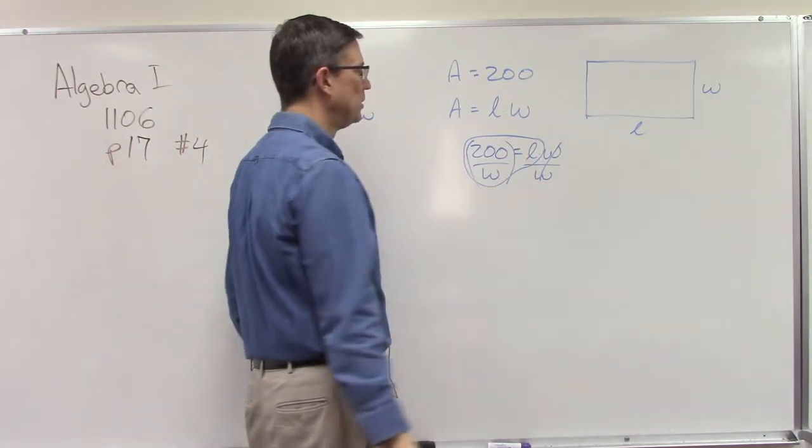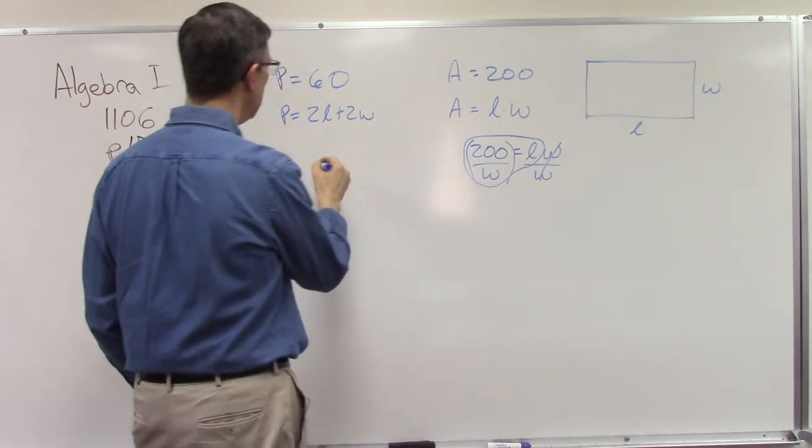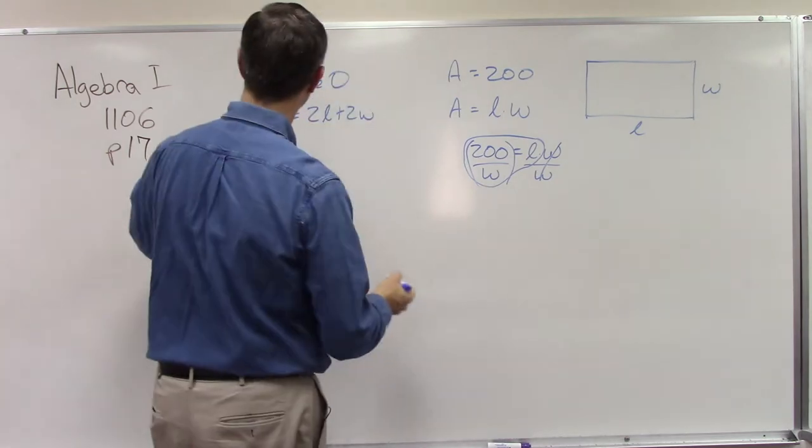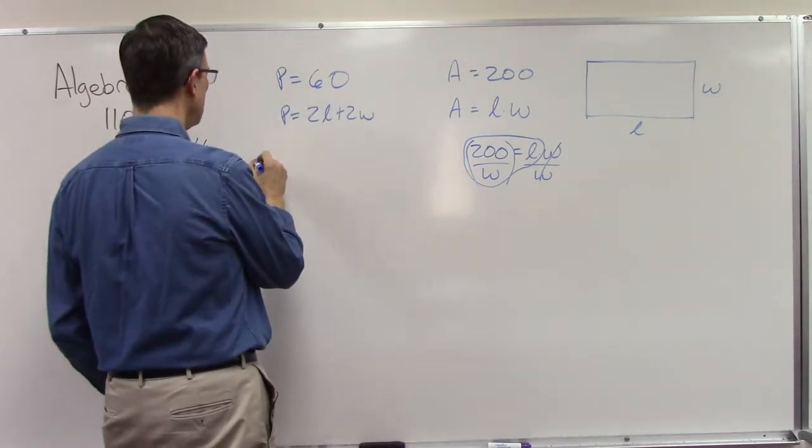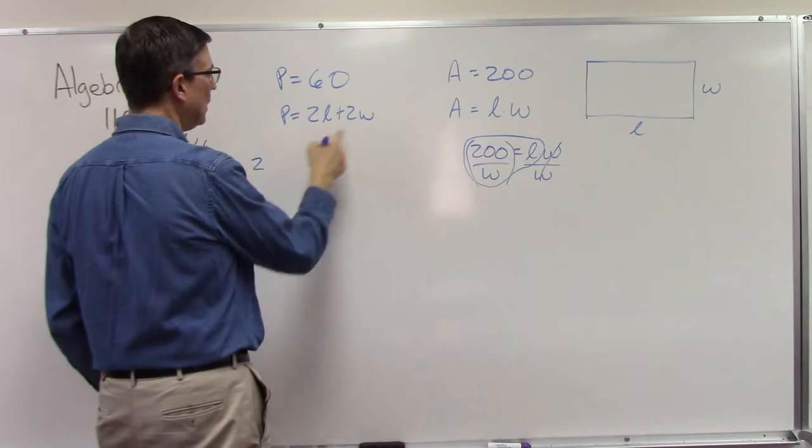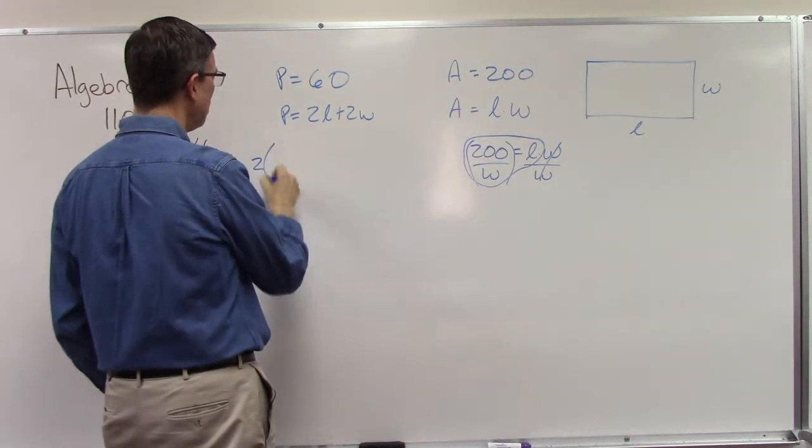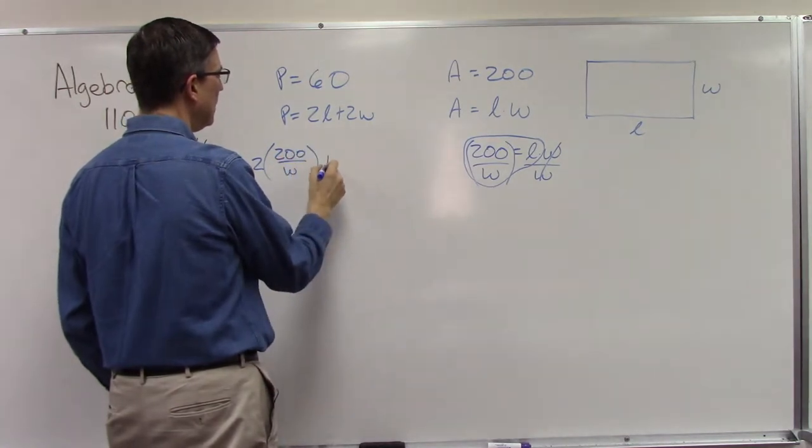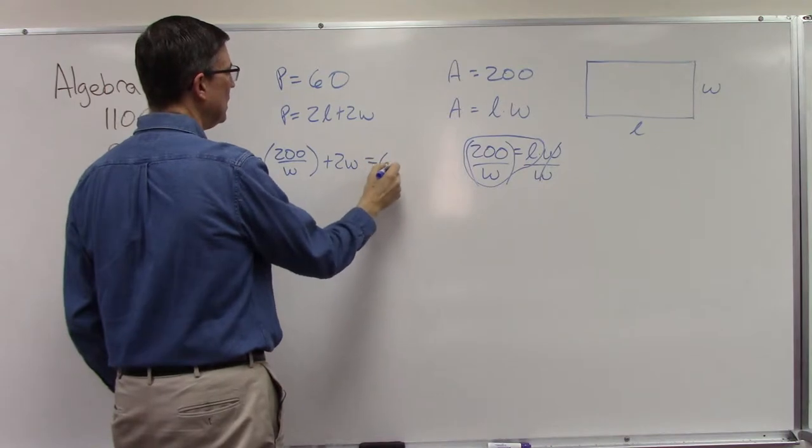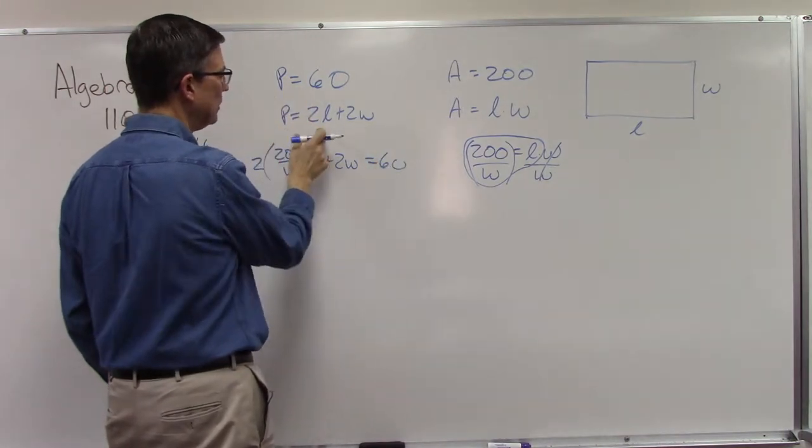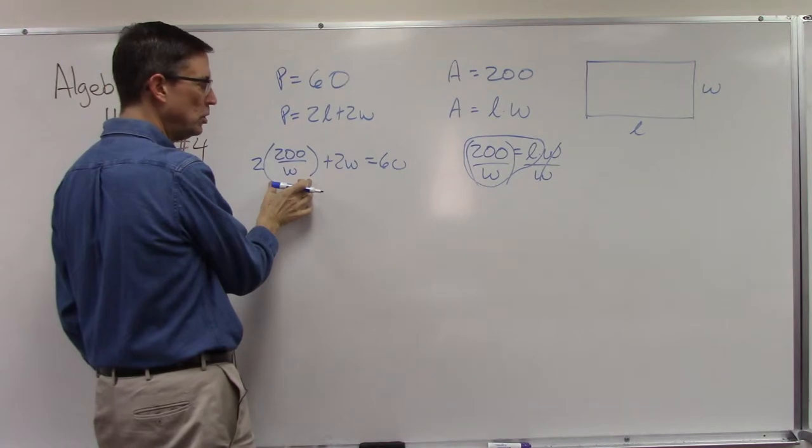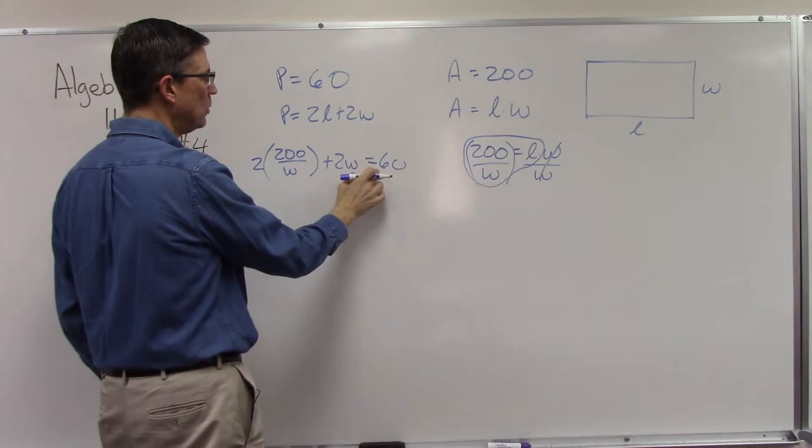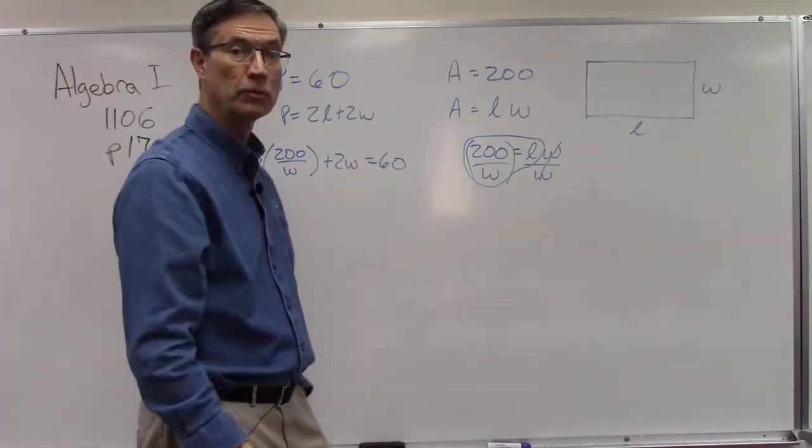Now I can take that expression for length, put parentheses around it, and plug it in. I know the perimeter is 60. I'm going to say 2 times the length, but we know that the length is 200 over w, plus 2w, and that equals 60. So 2 times the length when I substitute 200 over w for l, plus the 2w, equals the 60 that they told us in the problem.